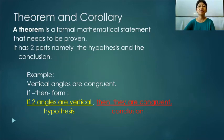Theorem and corollary. A theorem is a formal mathematical statement that needs to be proven. It has two parts, namely the hypothesis and the conclusion. Example, vertical angles are congruent. In the if-then form, if two angles are vertical, then they are congruent. If two angles are vertical is the hypothesis. And then they are congruent is the conclusion part.